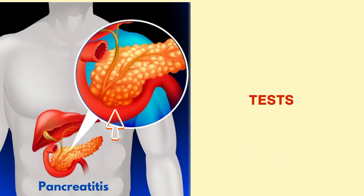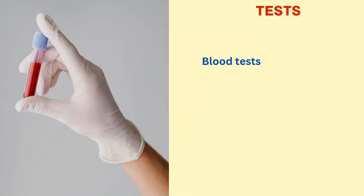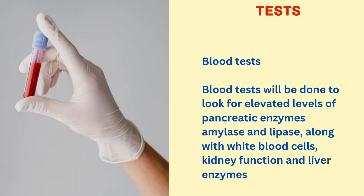Now let us see the tests. The first test is the blood test. Blood tests will be done to look for elevated levels of pancreatic enzymes — amylase and lipase — along with white blood cells, kidney function, and liver enzymes.